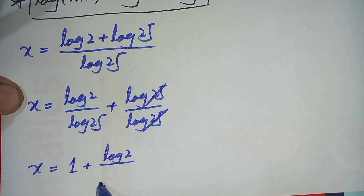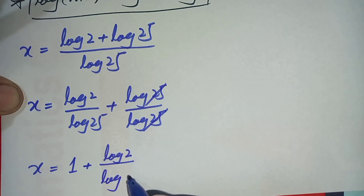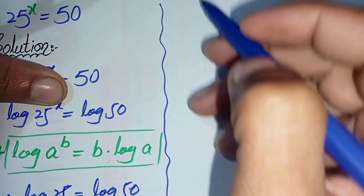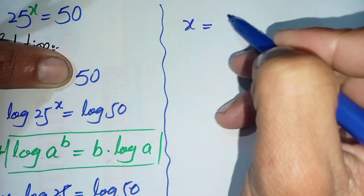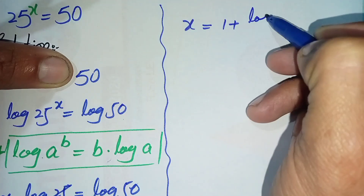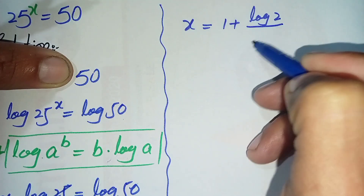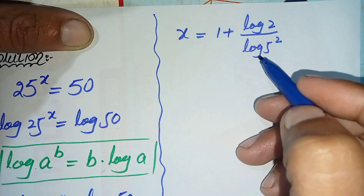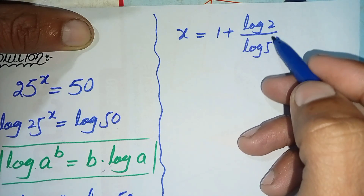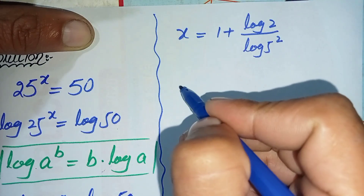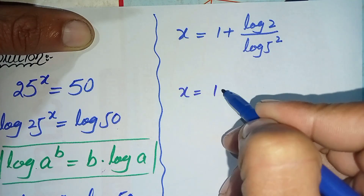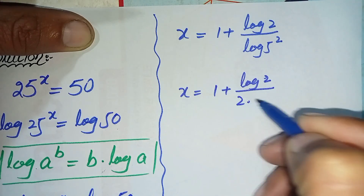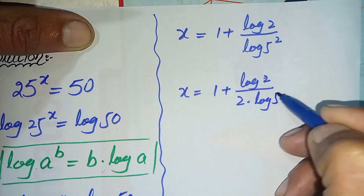We can write log of 25 as log of 5 raised to the power 2. Then using the log power property again, we shift the power to the front, so the equation becomes x is equal to 1 plus log of 2 divided by 2 times log of 5.